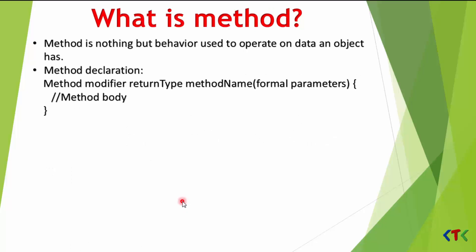Next is method. A method is nothing but a behavior used to operate on the data an object has. The method declaration includes a method modifier, a return type which is returned when we invoke the method, the method name, and formal parameters. The method body starts with an opening curly brace and ends with a closing curly brace.